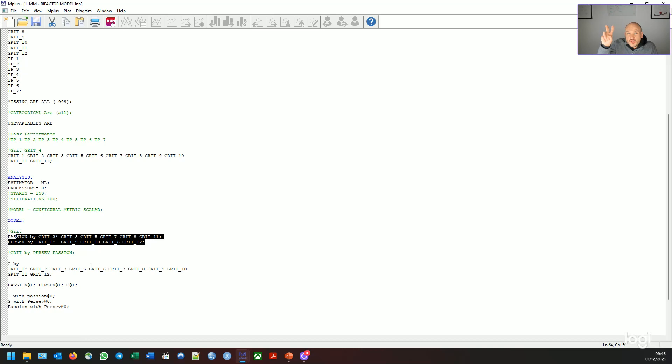So in the actual model command, this is where it becomes interesting. So we would specify the normal first order factors like we would do normally. So passion or interest is made up of items 2, 3, 5, 7, 8, and 11. And perseverance is made up of items 1, 9, 10, 6, and 12. But unlike a normal CFA, or a normal first order factor, where these items are constrained to be 1, we allow them to be freely estimated. So we open them up freely estimated. But then we also specify a general factor of grit. So two specific factors and one general factor. The general factor is then made up of all of these items together. And again, we just freely estimated the first factor, or the first item.